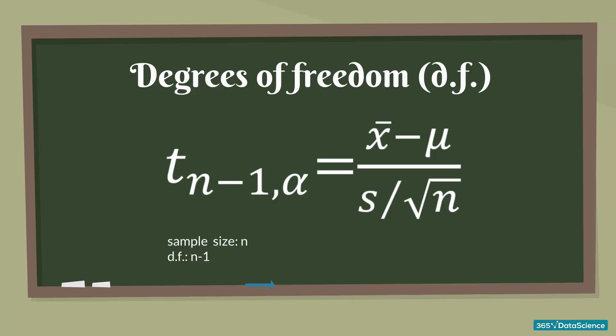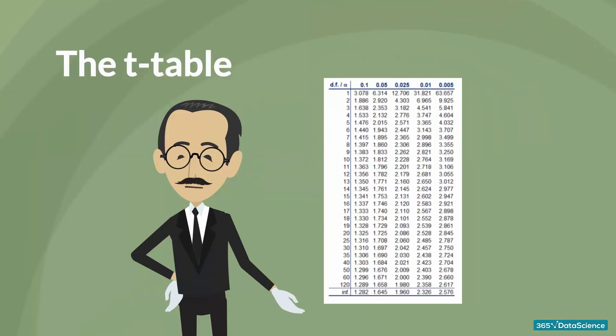Much like the Standard Normal distribution table, we also have a Student's t table. Here it is. The rows indicate different degrees of freedom, abbreviated as df, while the columns show common alphas.